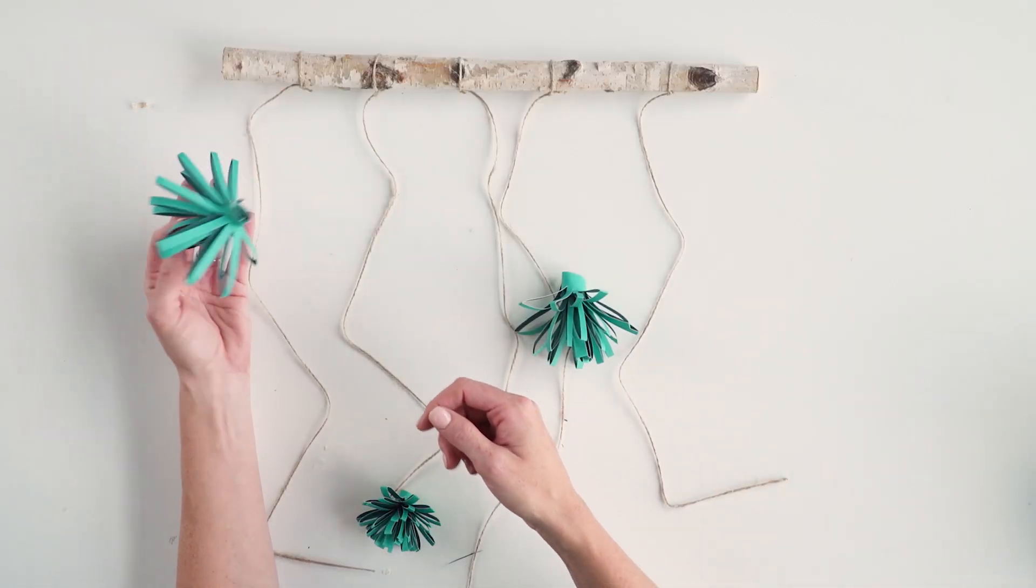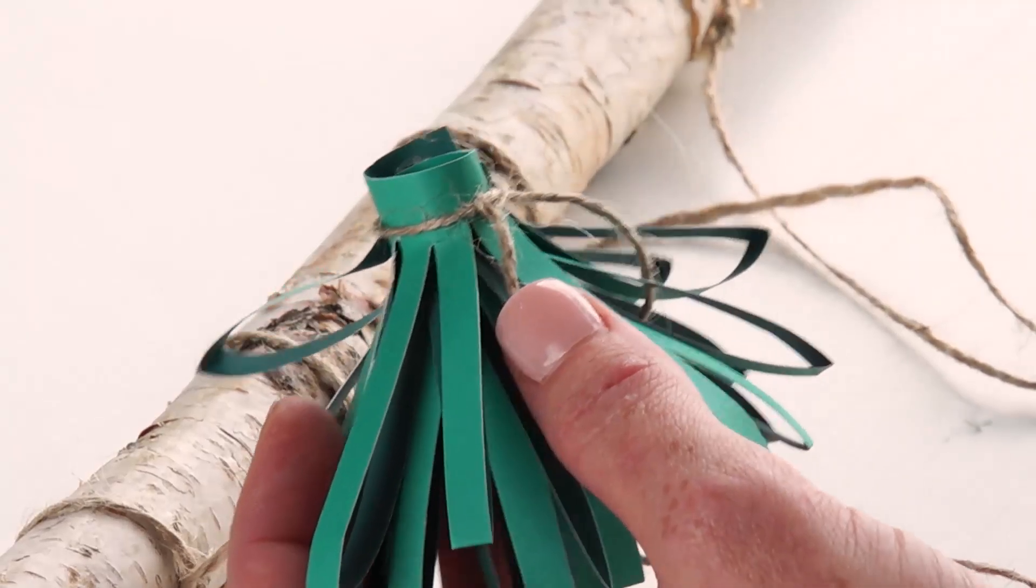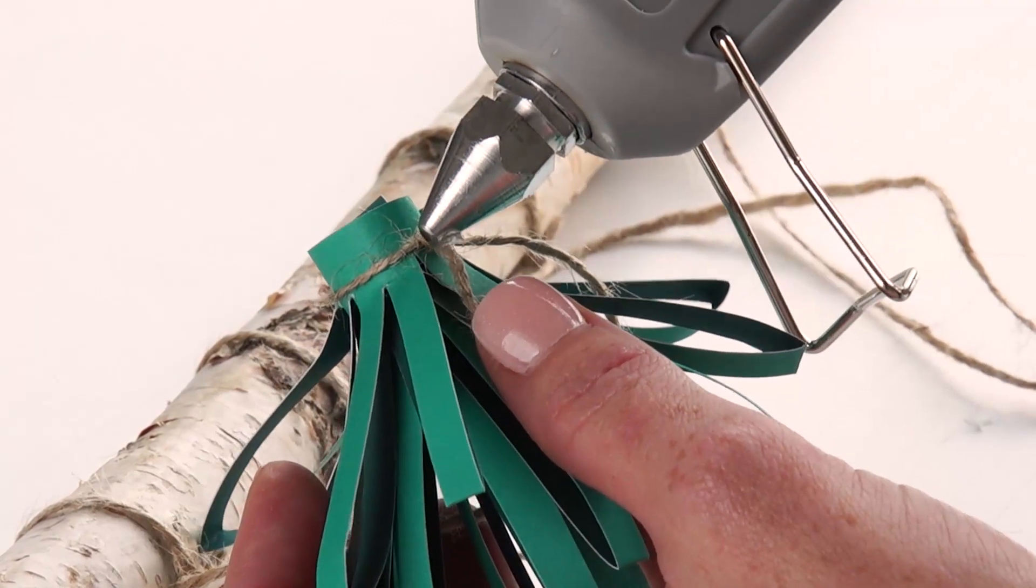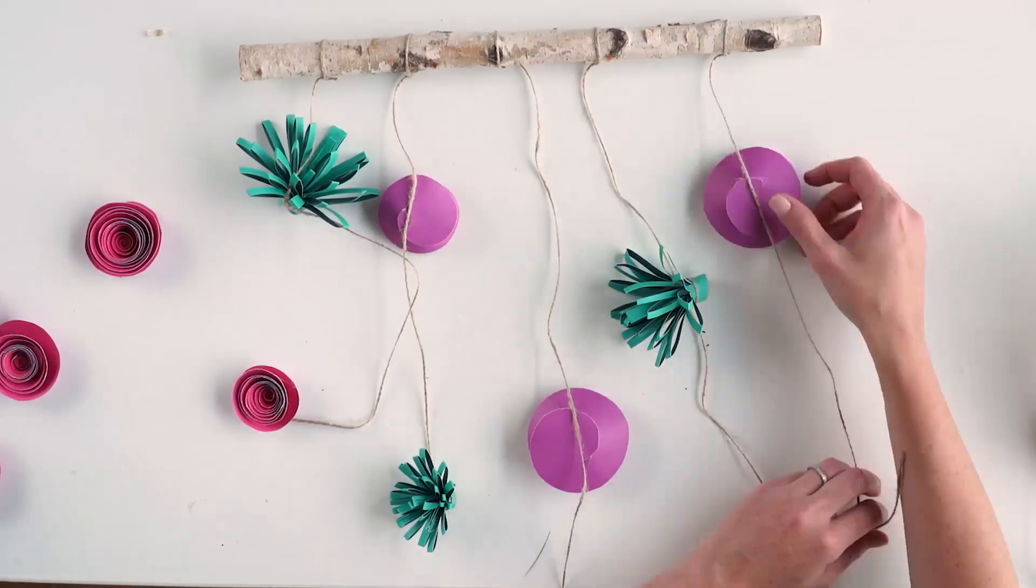You're going to take your twine, put it around the base of your flower, and tie a knot. For extra hold, just add a drop of hot glue right where the knot is.